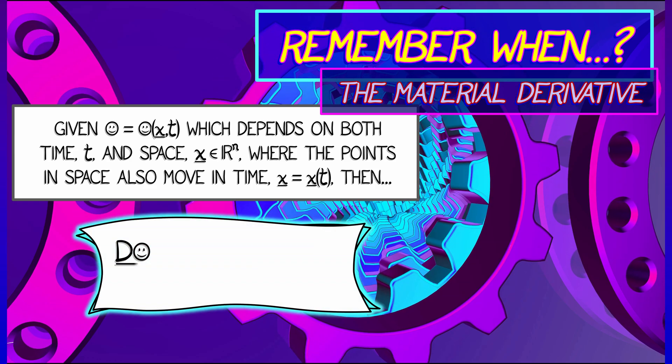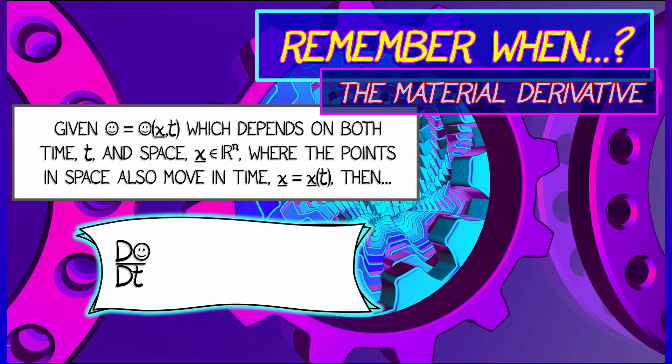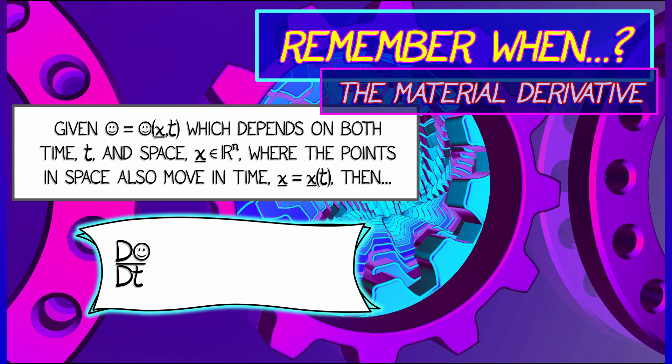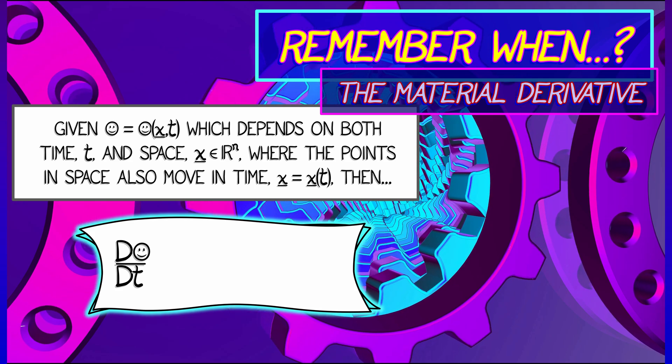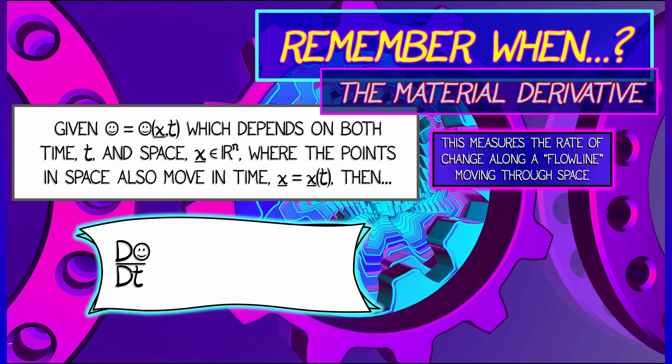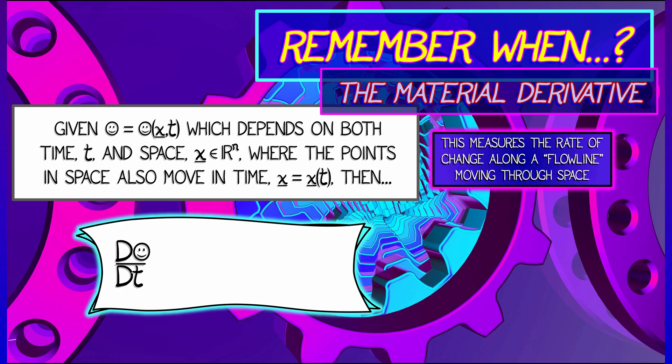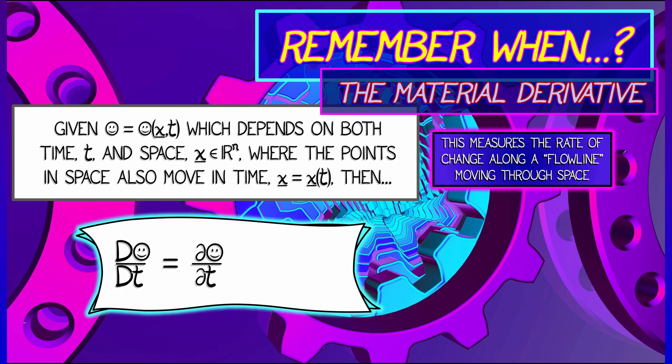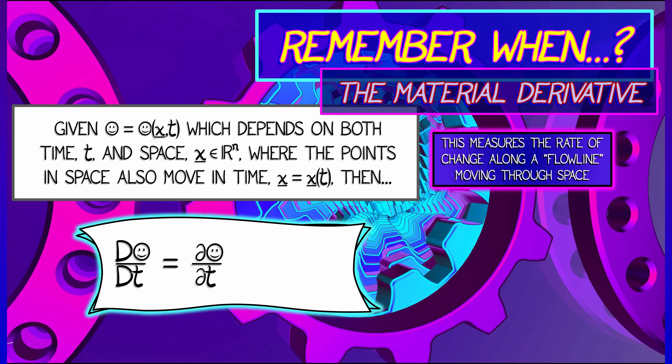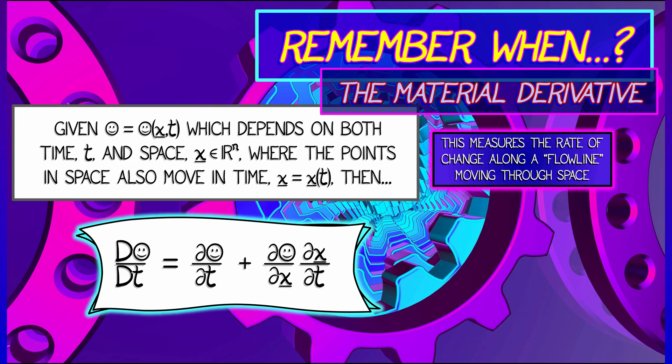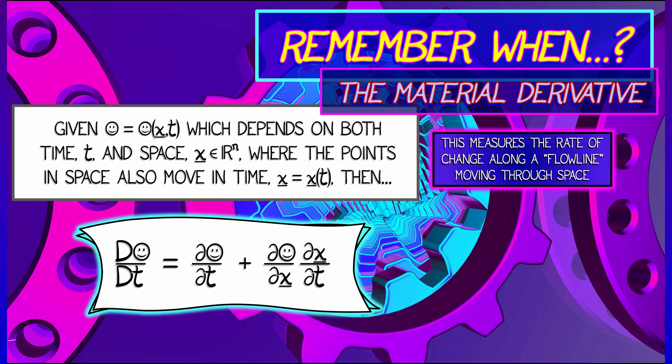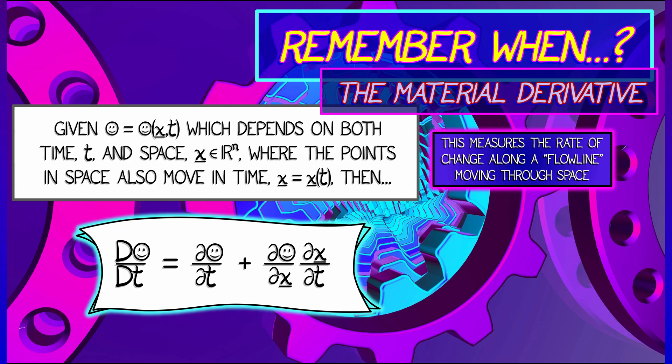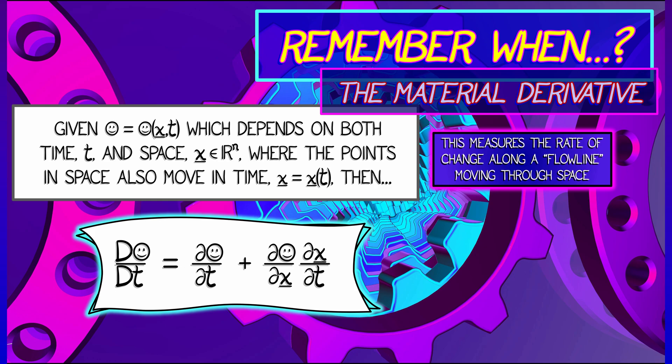Then, if I want to take the derivative of Smiley with respect to t, something called the material derivative, or sometimes the total derivative, is a special version of the chain rule that measures the rate of change of particles moving along flow lines as x changes with t. And what this is, is partial Smiley, partial t, the partial with respect to time, plus the partial derivative of Smiley with respect to location x times partial x partial t. Now, of course, this is nothing more than the chain rule.